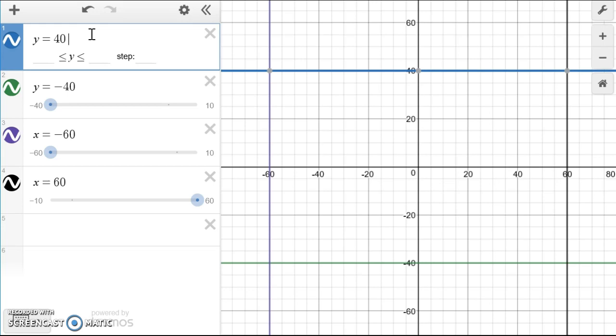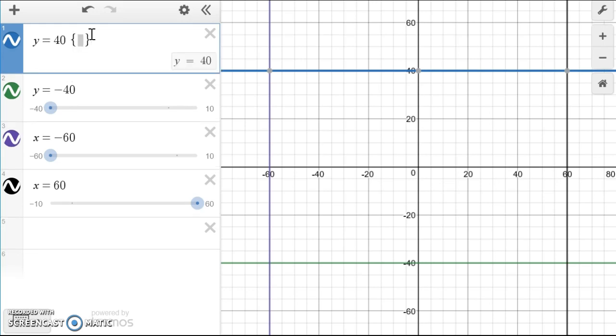In order to set a limiting range, we have to put curly brackets and for this blue line, we have to know which one is the minimum value and the maximum value. If we look at the minimum value, x is negative 60, y is 40.